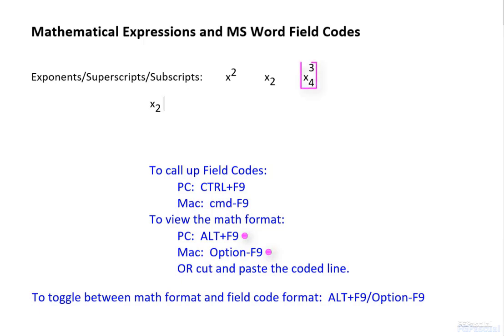To get an expression like x sub 4 cube, which has both a superscript and a subscript, type x first. Then we call up the field code brackets. Type eq space backslash s. Okay, this time we don't say up or down.